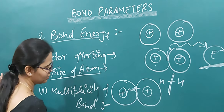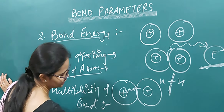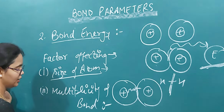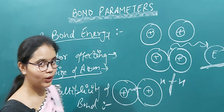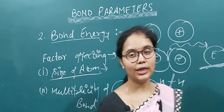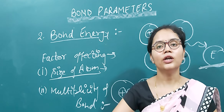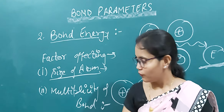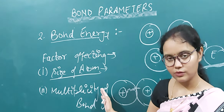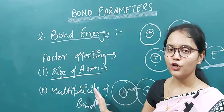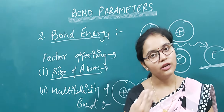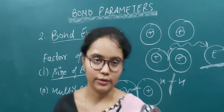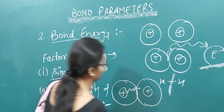Bond energy also depends on the multiplicity of bonds. In a double bond, two pairs of electrons are shared; in a triple bond, three pairs; and in a single bond, only one pair. As more electrons are involved in bond formation, a stronger bond is formed and more energy is required to break it. So with an increase in multiplicity of bond, bond energy increases.